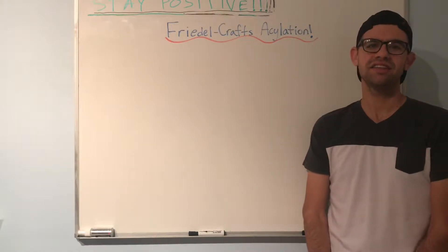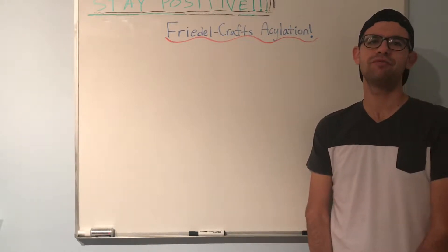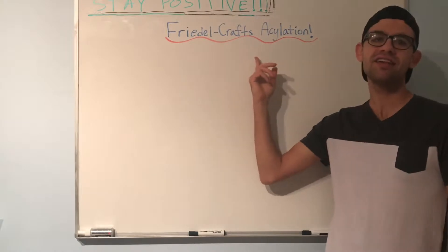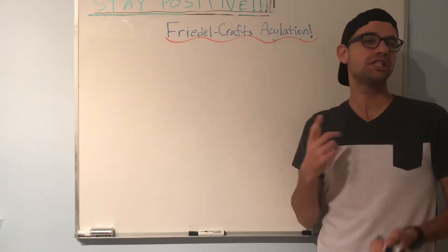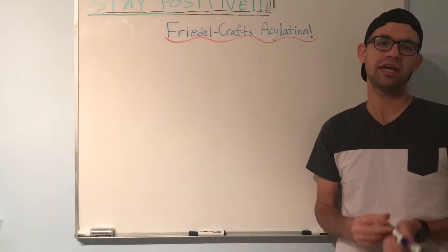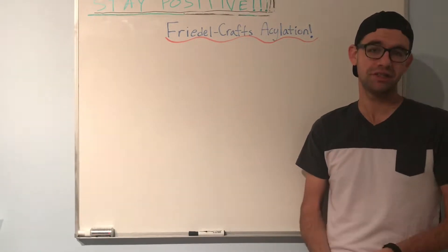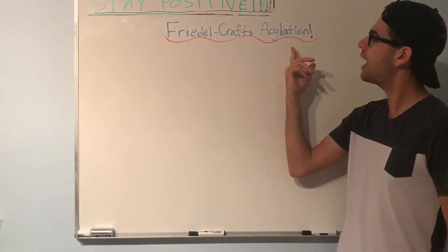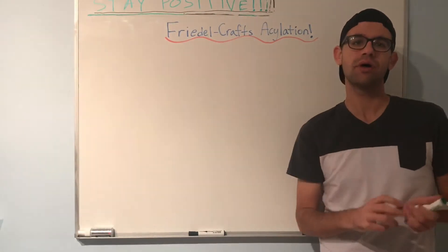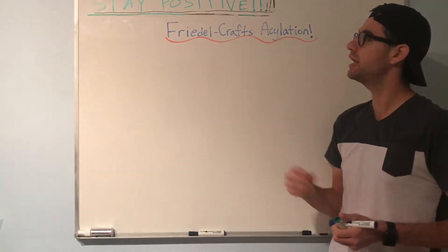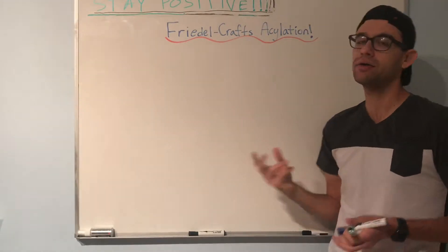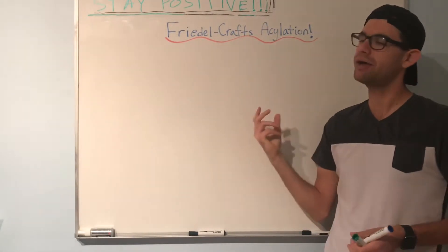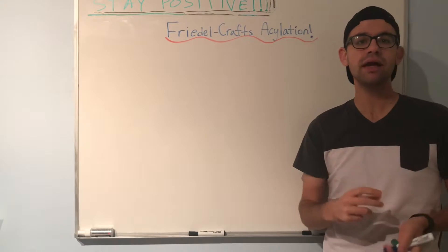Hey YouTube, how's it going? YakScience here with another OCHEM video. Today we're going to be talking about Friedel-Crafts acylation, which is a specific type of electrophilic aromatic substitution reaction. In this reaction we're going to be acylating, or adding an acyl group, onto an aromatic compound like benzene. In this video I'm going to show you how to add an acyl group onto a benzene ring.